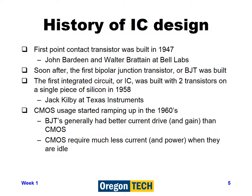Starting with a brief history of integrated circuit design: the first point contact transistor was built in 1947 by John Bardeen and Walter Brattain of Bell Labs. Soon after, the first bipolar junction transistor, or BJT, was built. The first integrated circuit, or IC, was built with two transistors on a single piece of circuit by Jack Kilby at Texas Instruments. We're at many more transistors nowadays, but an IC refers to anything with more than one transistor on a single piece of silicon — from two transistors to two billion.